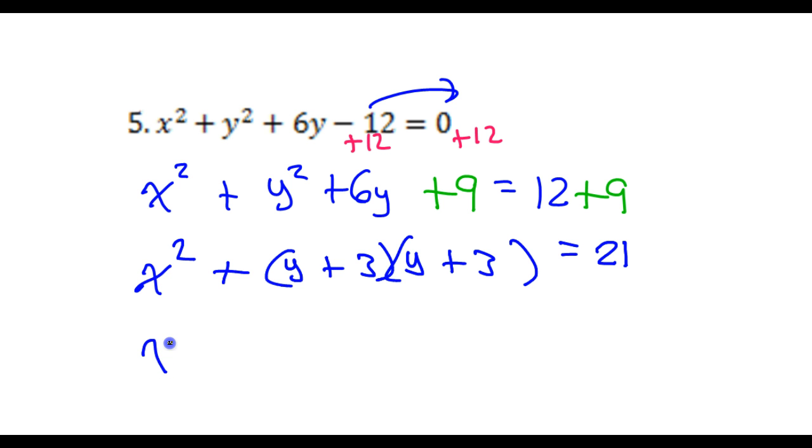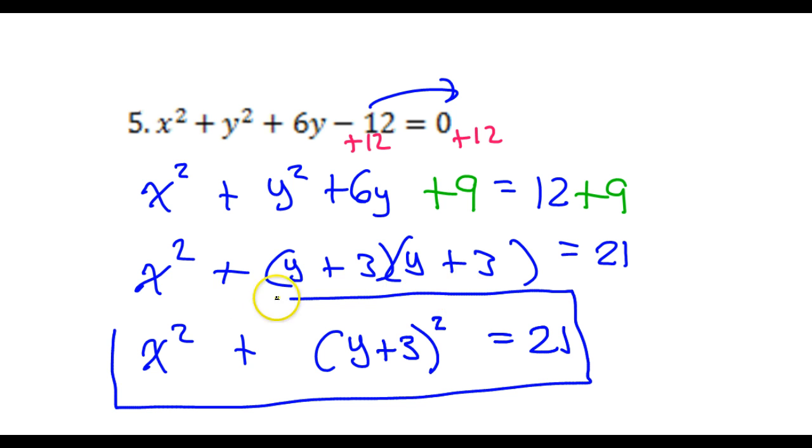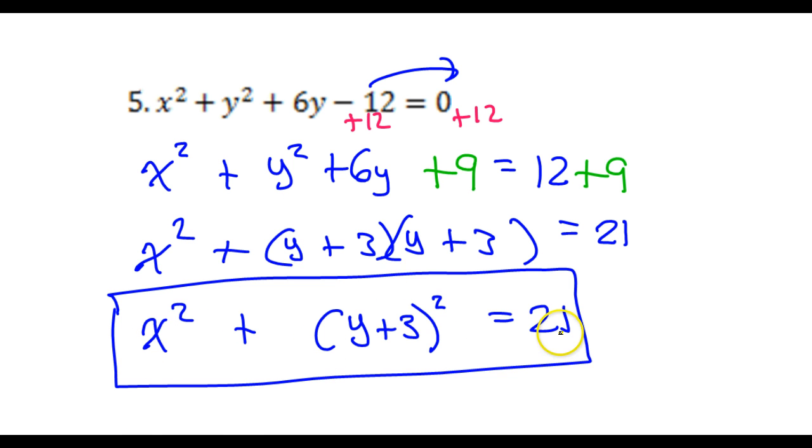So last step. So I've got my x squared plus, I'm going to collect these together as y plus 3 squared. Is equal to 21. And this is now standard form. Here endeth the lesson.